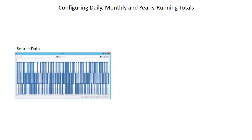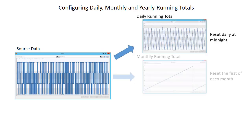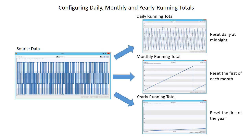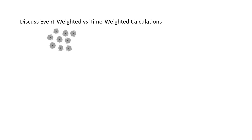There are many scenarios where you may want to compute summary calculations of your PI system data. One of the most common calculations are running totals, where you may want to know daily, monthly, and yearly running totals of a PI tag as its input. These calculations apply to tags where each event indicates a discrete number of items manufactured, as well as tags that indicate the continuous flow rate of a sellable product. These are known as event-weighted and time-weighted calculations.